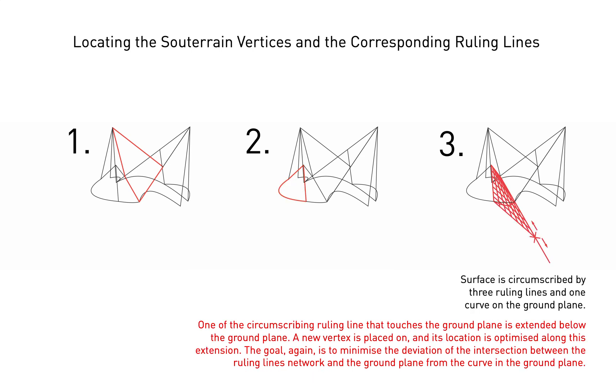Surfaces in the third category are circumscribed by three straight lines and a curve in the ground plane. In this case, we locate the fourth point on a souterrain extension of one of the ground intersecting straight lines and optimize its location on that extension using the same optimization sequence and objective as described before.